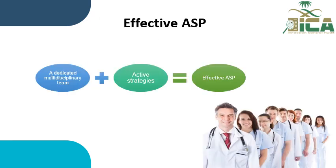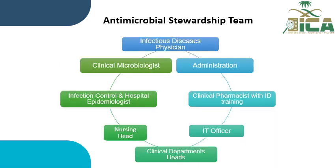For an effective ASP, we need to remember this equation: we need first a dedicated multidisciplinary team, and we need active strategies. The antimicrobial stewardship team members, as mentioned in sub-element C3.4 in the ICA, include the following.